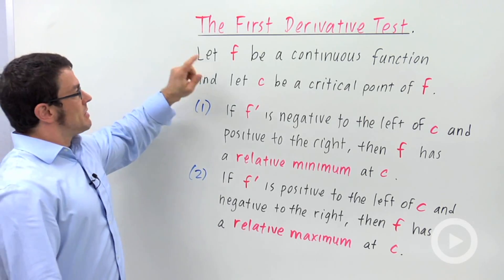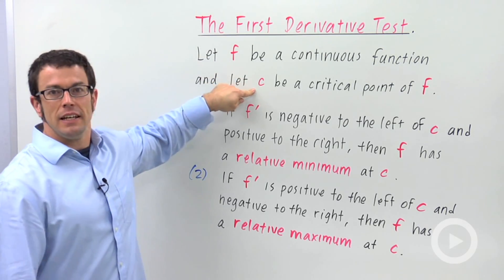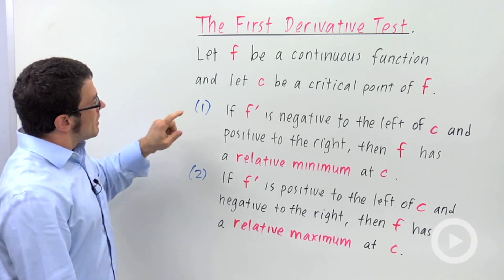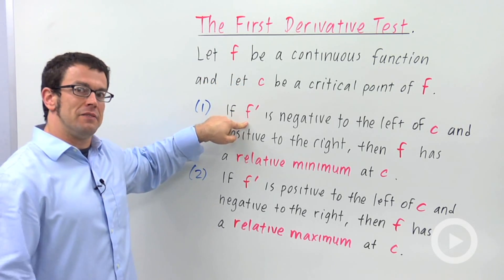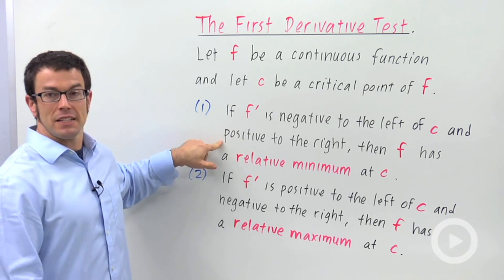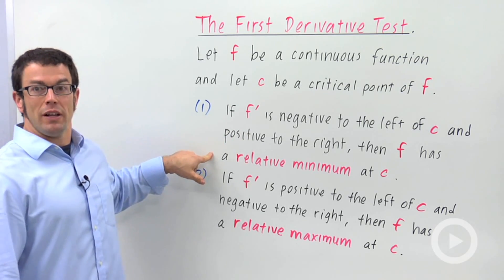And it starts out assuming that f is a continuous function and c is one of its critical points. If f prime is negative to the left of c and positive to the right, then f has a relative minimum at c.